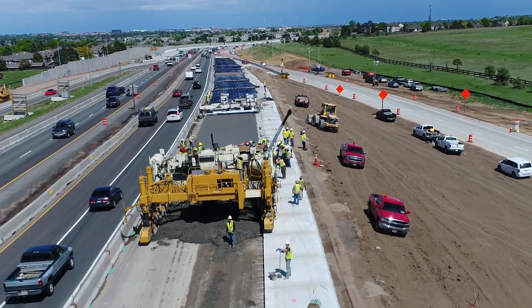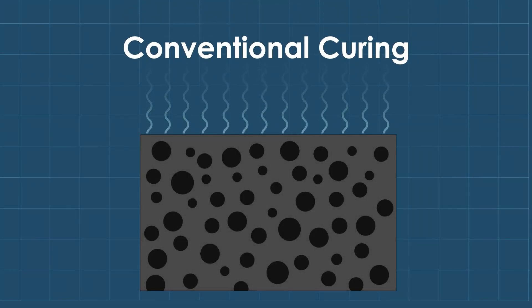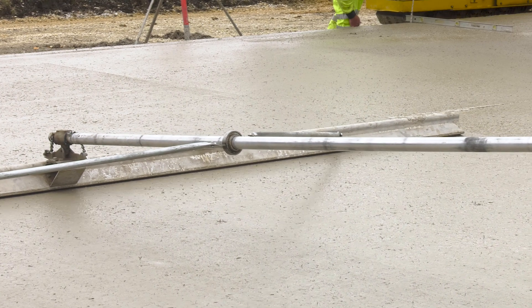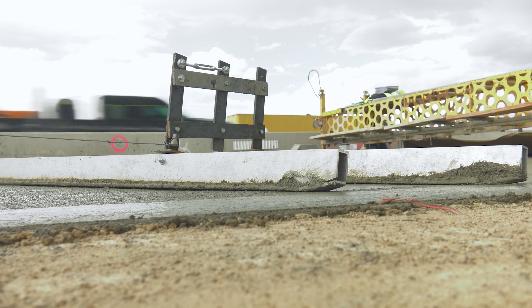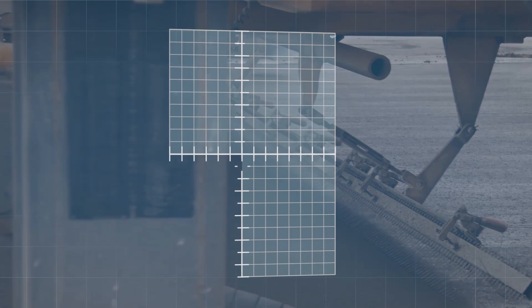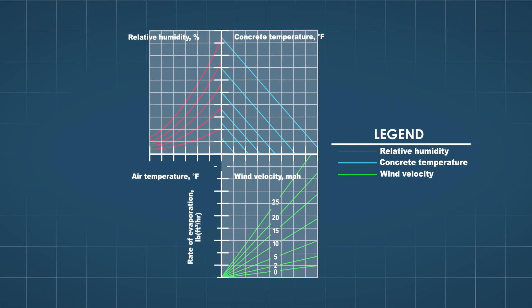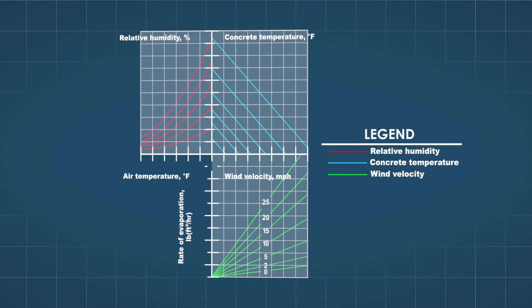Conventional curing begins immediately after finishing is complete. The purpose of conventional curing is to control the evaporation of moisture from the surface for the duration of the specified curing period. During the finishing process, downward pressure from the finishing operations brings water to the surface. Along with the high surface area created by texturing operations, this results in increased evaporation. The rate of moisture evaporation depends on the air temperature, relative humidity, concrete temperature, and wind velocity.